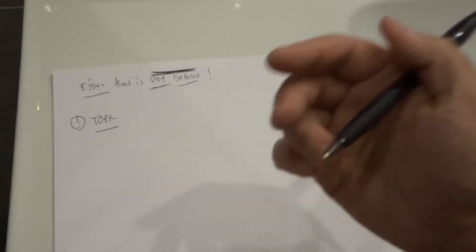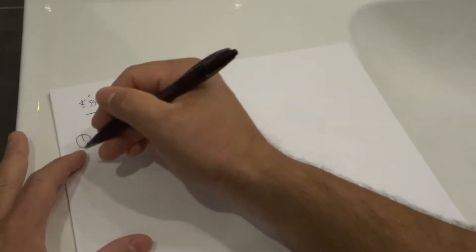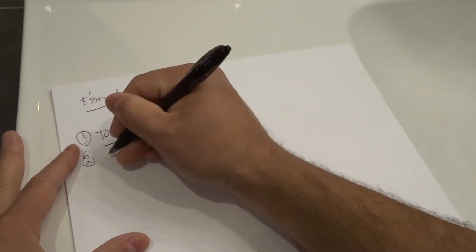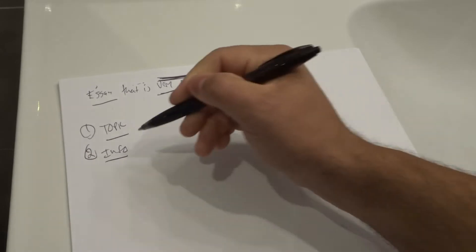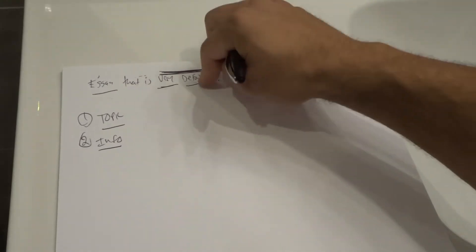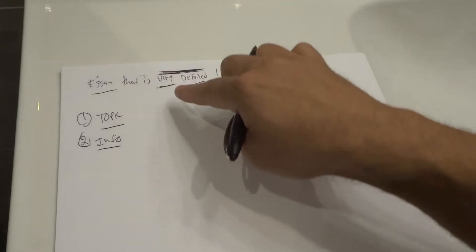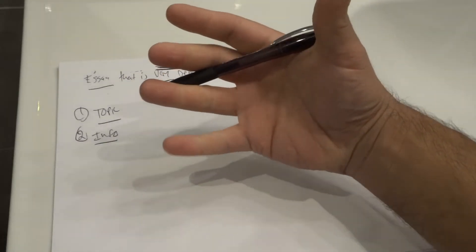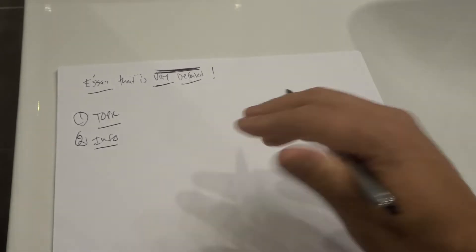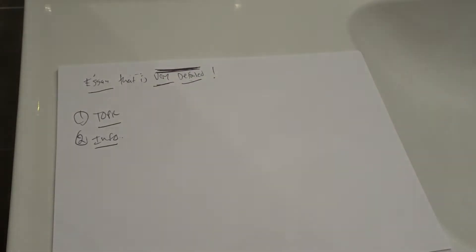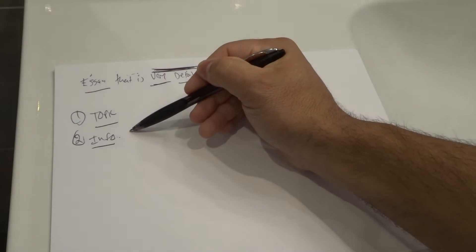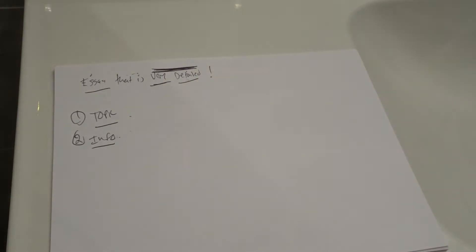Step number two is to gather as much information as possible. You want to gather as much info as you can before you start writing, because you want to write with the intention of giving those details and making it very detailed throughout the writing process. You can add in more details after, but you want to get that info in advance.